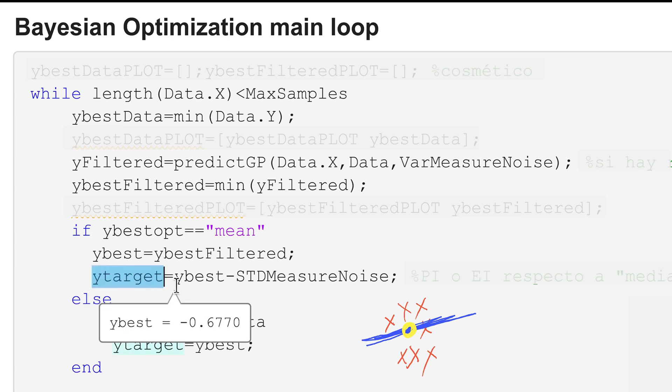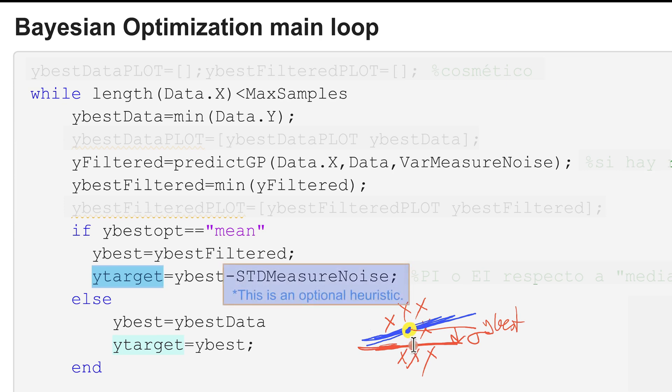And then once we have decided my best thing, we must decide what I called y target which is the target for improvement in expected improvement or probability of improvement. If I opt for the filtered version then my target estimate will be my best level minus we want to improve at least one standard deviation of the measurement noise because otherwise I cannot actually say that I have improved.